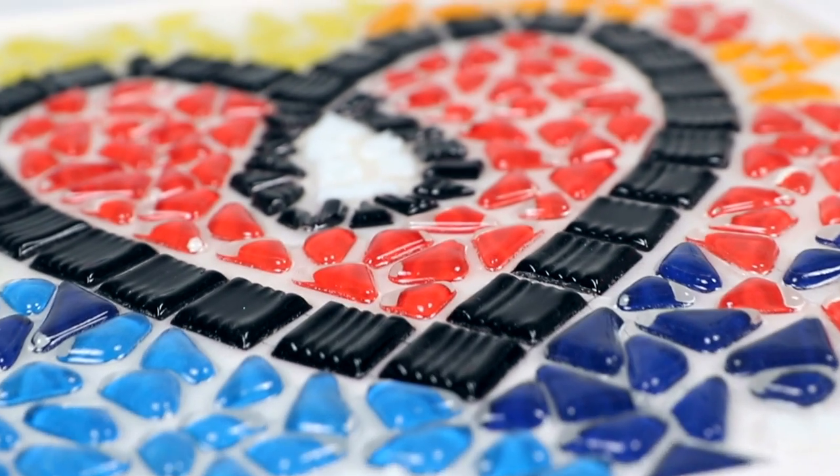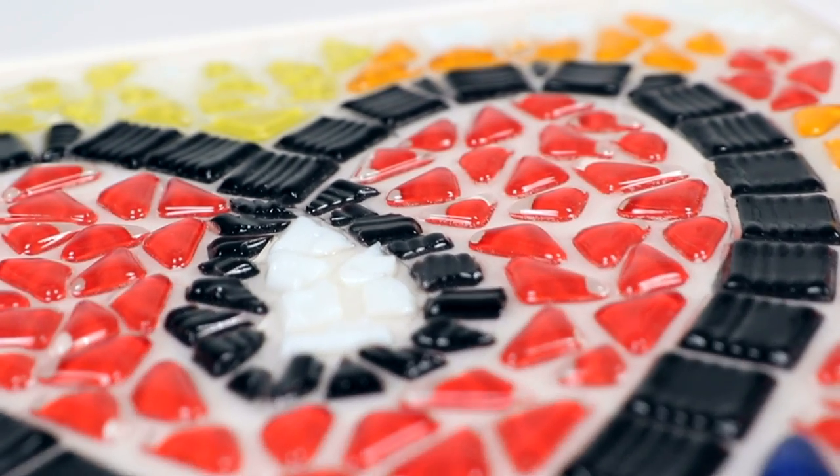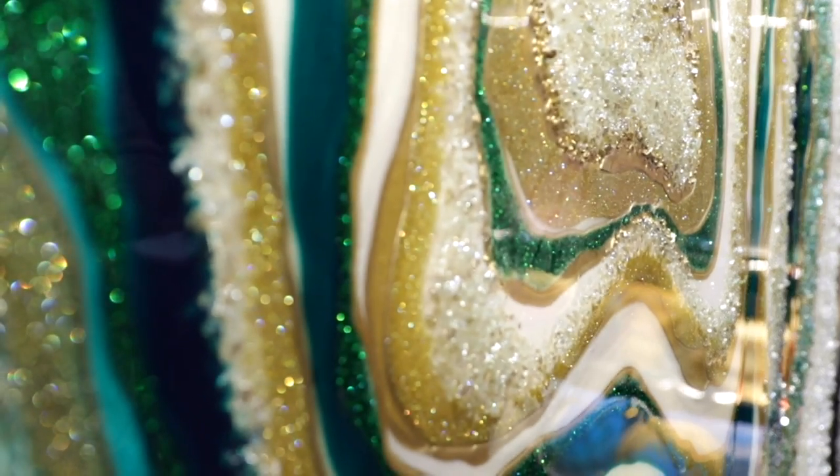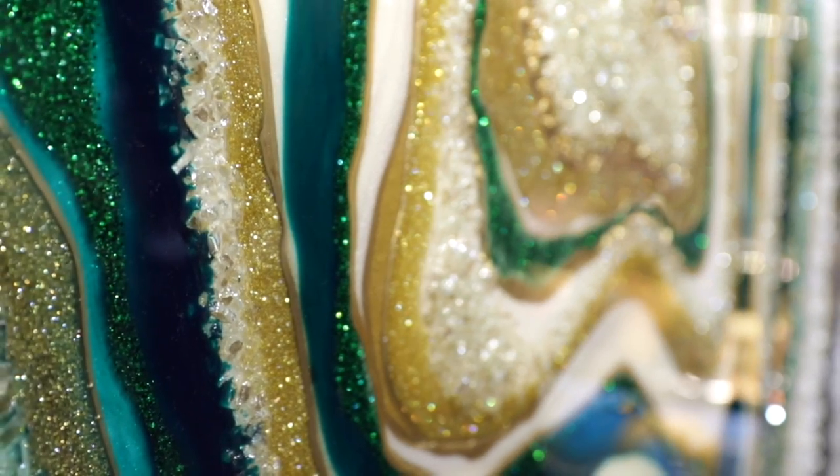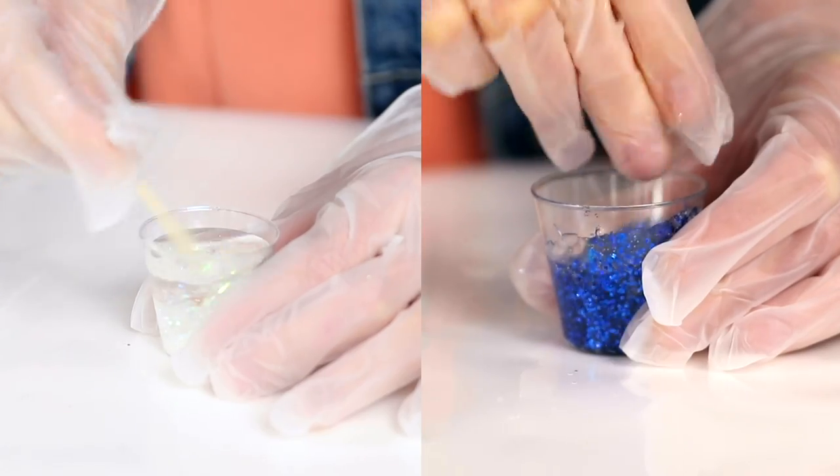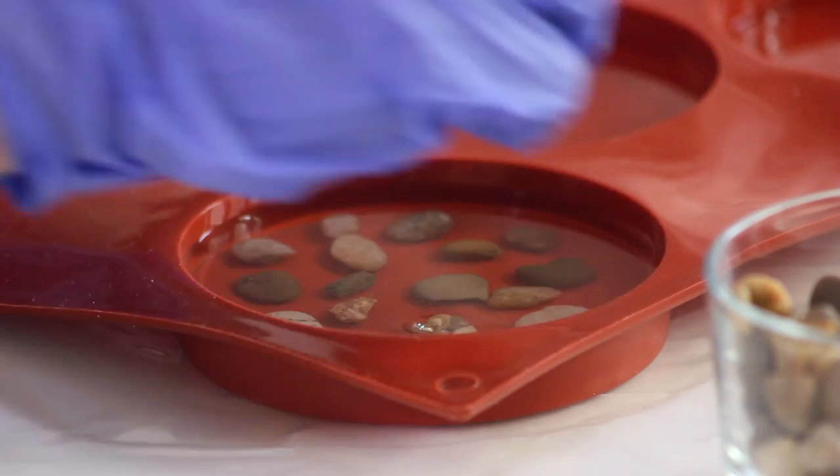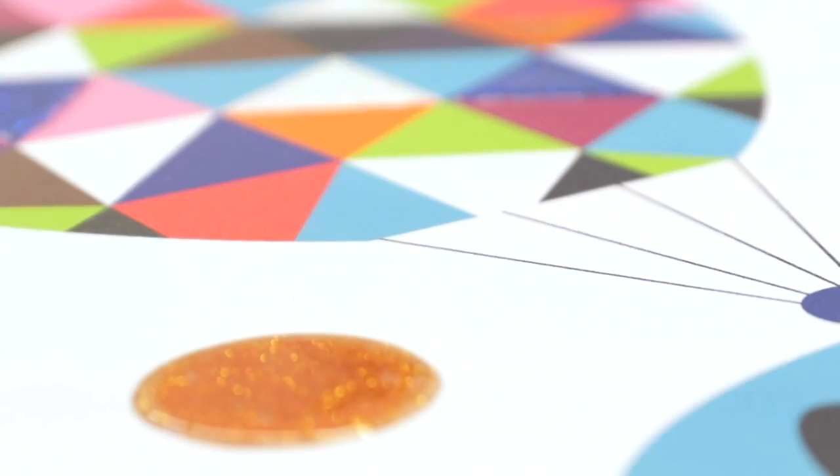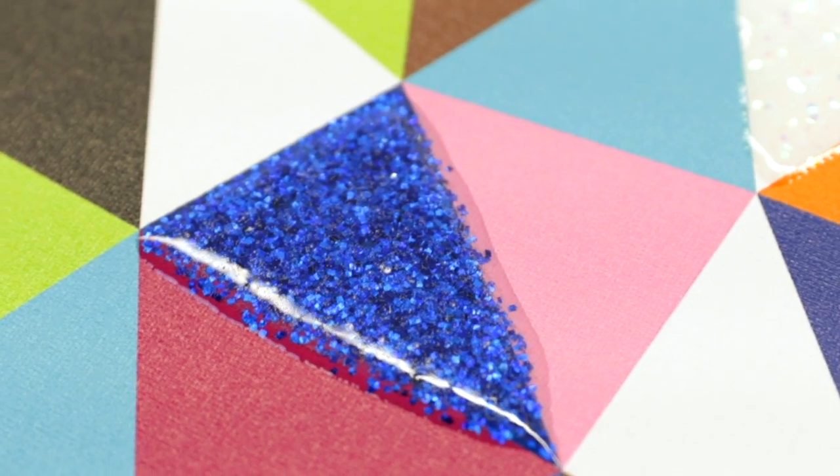Inclusions. You can add little embellishments to your work to create interest and texture. You can add flakes of gold leaf. You can add crushed glass or crystals to replicate geodes. You can add sparkle with glitter. You can create coasters with beer caps, shells, rocks, glass tiles, dried flowers. You get the idea. Just make sure that whatever you're adding to the resin is thoroughly dry.